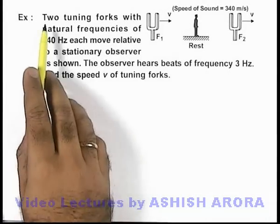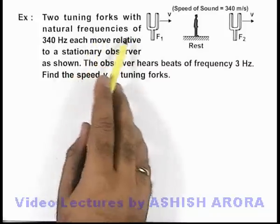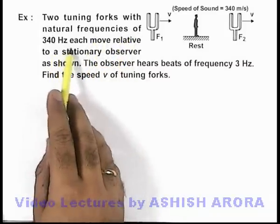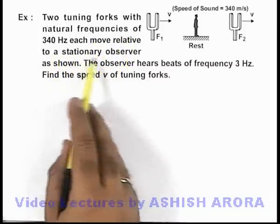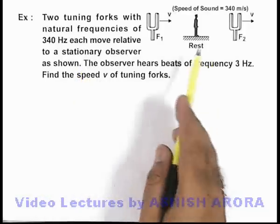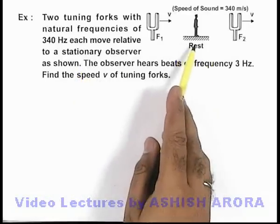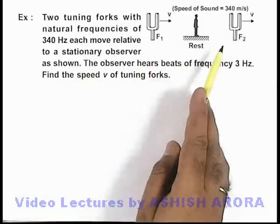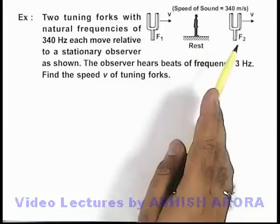In this example we are given two tuning forks with natural frequencies of 340 hertz each, moving relative to a stationary observer. As we can see here, the observer is at rest and forks f1 and f2 are moving with the same speed.